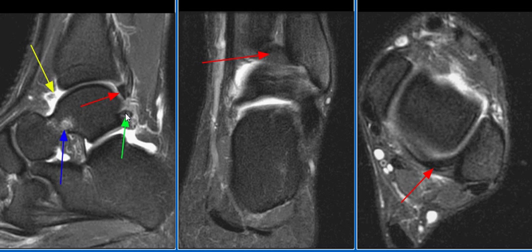Mild proliferative synovitis is seen, as demonstrated on this sagittal image with the yellow arrow.